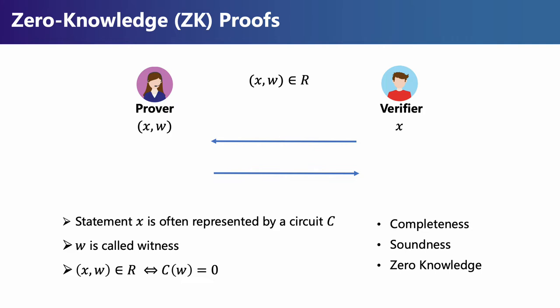Zero-knowledge proofs need to satisfy three properties. Completeness means the verifier always accepts for an honest execution. Soundness means a malicious prover cannot convince an honest verifier that a false statement is true. Zero-knowledge means a malicious verifier cannot learn any information except that the statement is true.